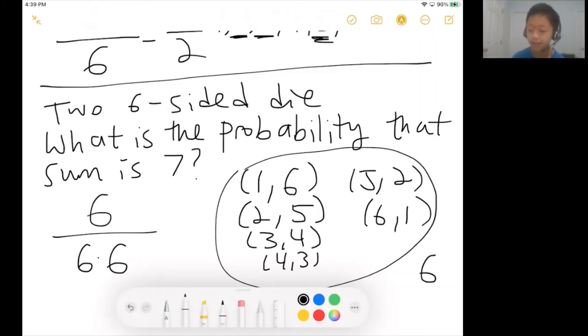So you do six divided by six times six, so you would get one divided by six as the probability. And yeah, again, what this means is if you were to take these two dice and you were to roll these two dice a bunch of times, eventually one sixth of these rolls will have a sum of seven. So that's what this probability basically means.